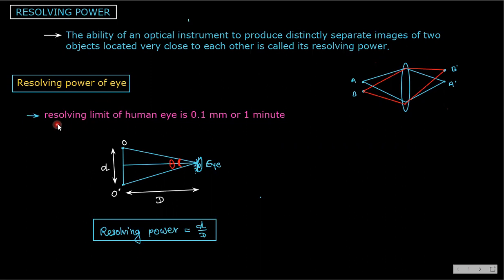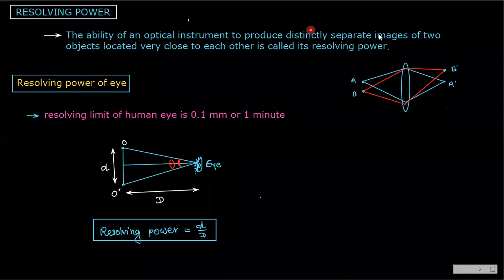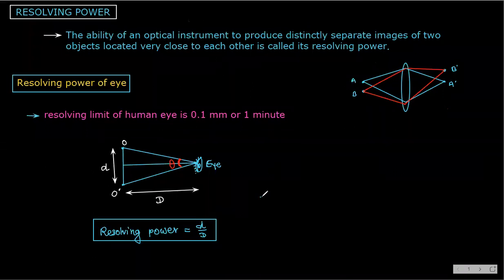The resolving limit of the human eye is 0.1 millimeter, or one minute. Our eye can differentiate two objects placed very close to one another if the distance between them is 0.1 mm. The angle subtended at the eye by these two objects should be a minimum of one minute — only then can we differentiate those two objects and produce two different images.